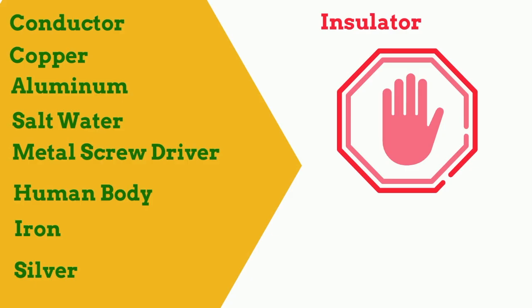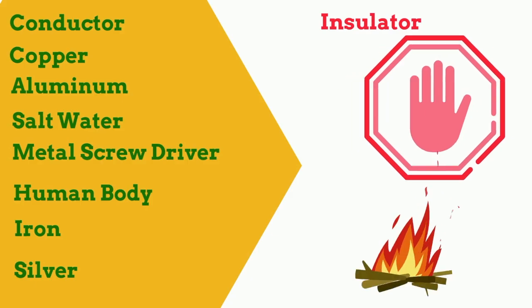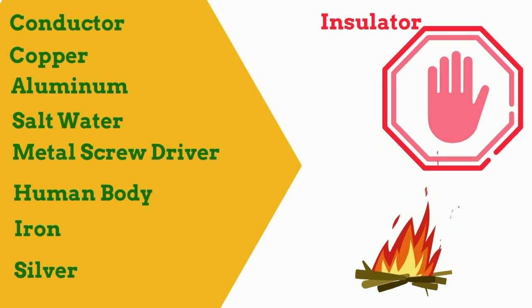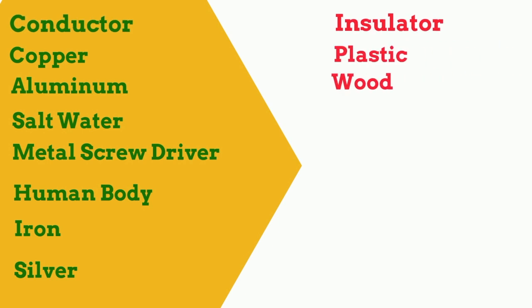And the insulators are red because they stop the flow of electrons. By the way, most electrical insulators and conductors are also thermal insulators and conductors. We have plastic, wood, the sharpie because it's plastic, the plastic end of the screwdriver.